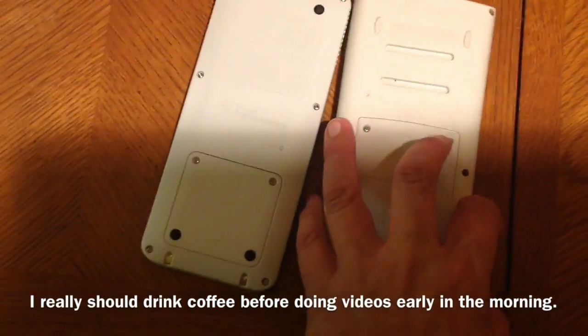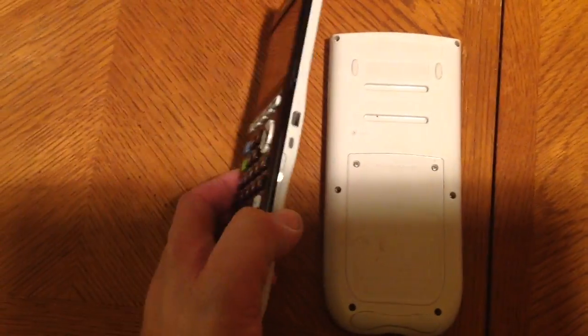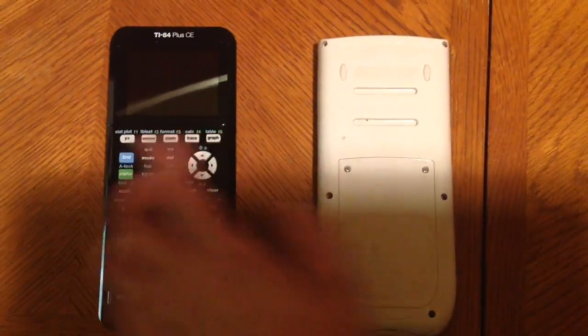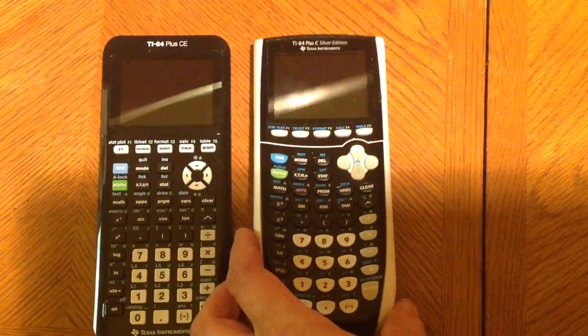I just want to show you what the back is like, and show you how thin the CE is relative to this C Silver edition.